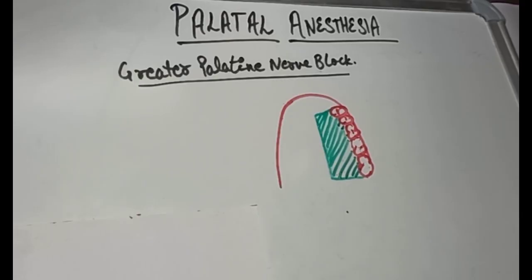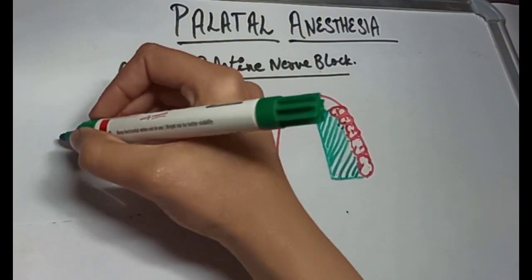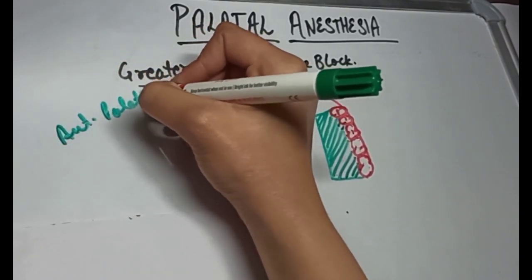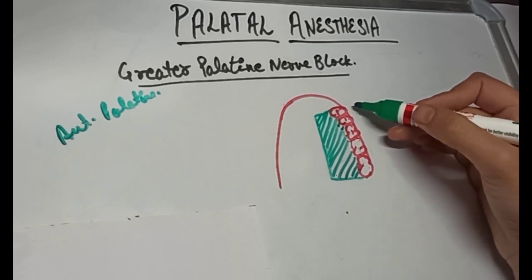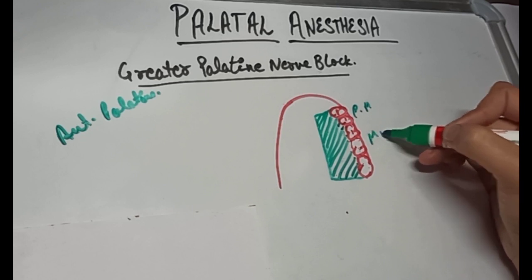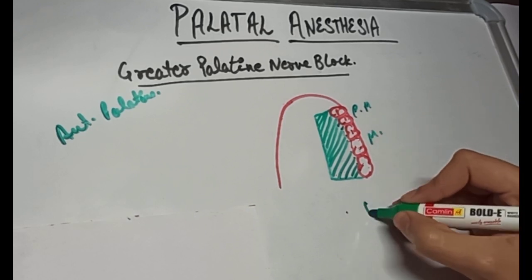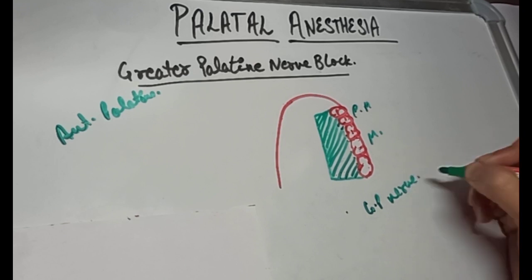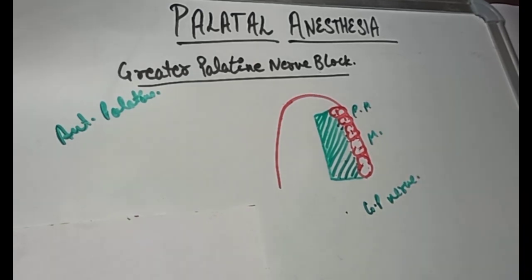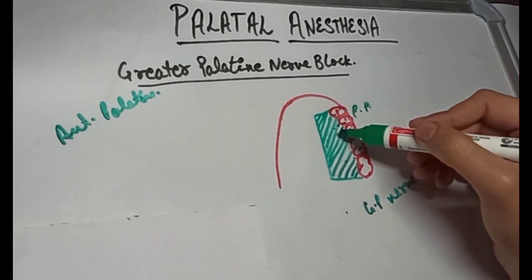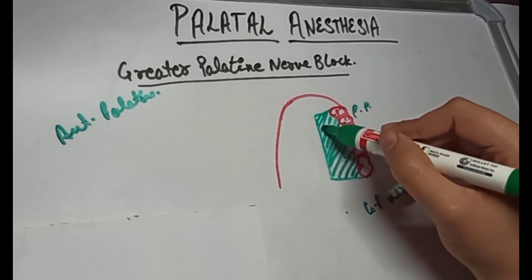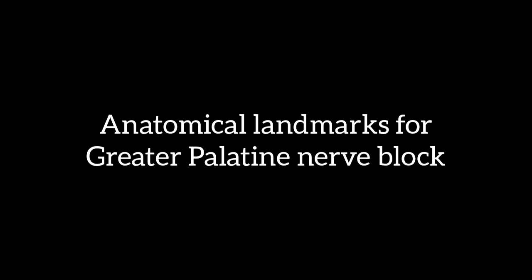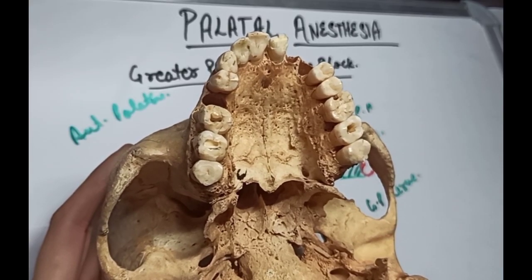Let's first see the greater palatine nerve block, which is also called the anterior palatine nerve block. It is useful in procedures involving palatal soft tissues distal to the canine, i.e., the premolars and the molars. The nerve anesthetized is the greater palatine nerve. The areas anesthetized are the posterior portion of the hard palate and its overlying soft tissues around the premolar and molar areas, medially till the midline.